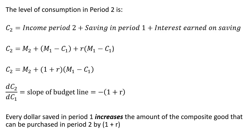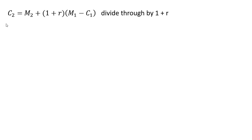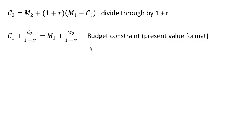Rewriting our expression for consumption in period 2, I'm now going to simplify by dividing through by (1 + R). So income in period 2 is divided by (1 + R), consumption in period 2 is divided by (1 + R), and the C₁ term is moved to the left-hand side. We could call this our budget constraint in present value format — we're discounting consumption in period 2 and income in period 2 back to period 1 by (1 + R).